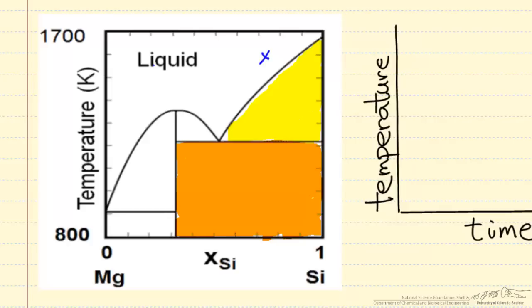The yellow region corresponds to a mixture of liquid and solid silicon. If we pick some point in this region, the lever rule will tell us how much liquid is present with this composition in equilibrium with solid silicon.